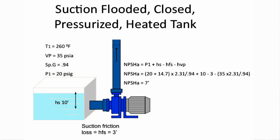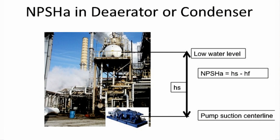Again, looking at the same system — everything is the same except the temperature goes up to 260 degrees Fahrenheit, which is the boiling temperature of 20 PSIG water. So the water is boiling, and therefore the 20 PSIG suction pressure is canceled out by the vapor pressure. The NPSHA is only the static height minus friction. This is a very common application in boiler feed water pumps, where the suction is from a deaerator, which is a boiling vessel. Another would be a condenser, where the liquid is condensing. In these cases, the NPSH is only the static height minus the vapor pressure.